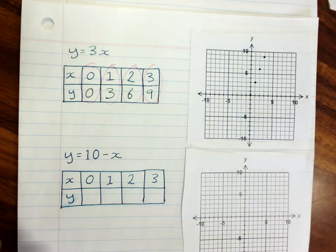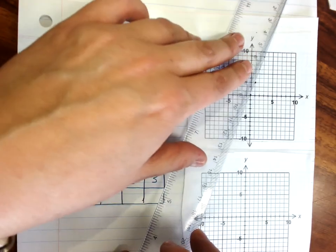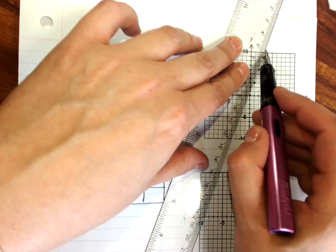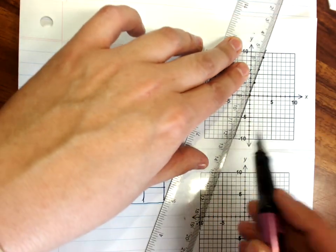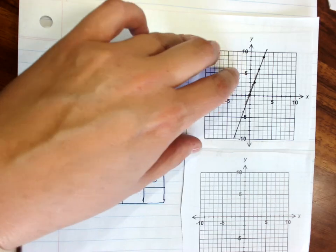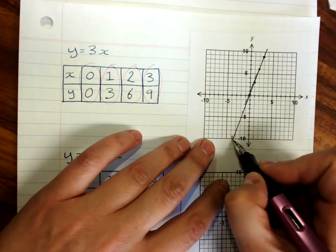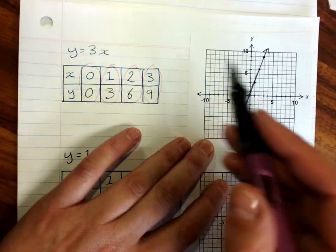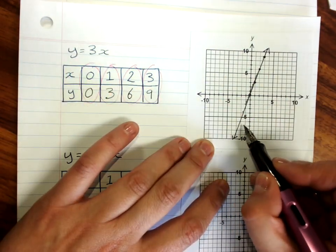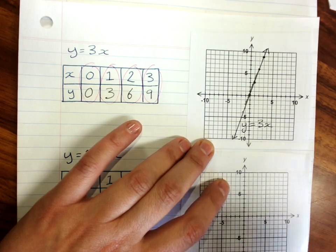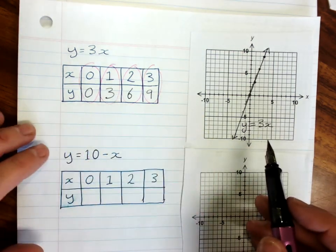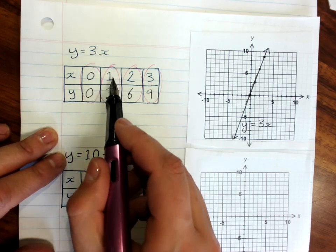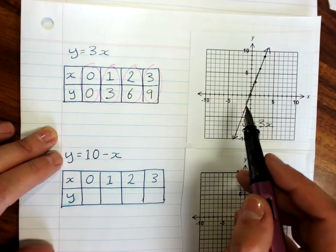When we've got our points plotted, we join them up very carefully with a ruler, making sure to fill the whole number plane, and use a pencil by the way. I'm just using a pen so you can see it. An arrow at either end, and the rule that gave us this line, we write next to it, y equals 3x. So you go from the rule to the table, from the table to the graph.